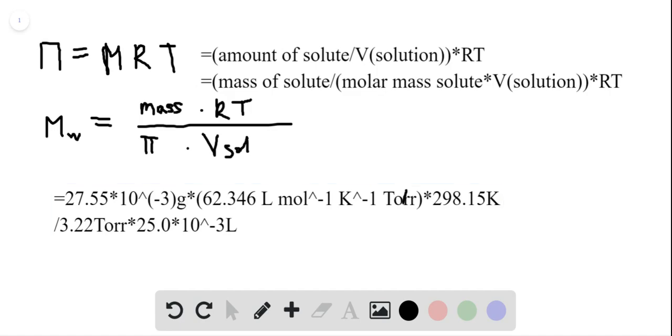Now when we take a look at our units, we see that we have Torr here up and down. We have liters here, liters here. We have Kelvin to the power of minus 1 and we have Kelvin. So the remaining units are mole to the power of minus 1 and grams, which is a good sign for us because we want to get molecular weight, which would be in grams per mole.